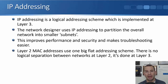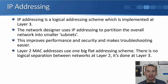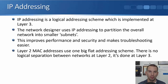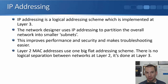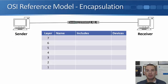At layer 2, which we'll cover in the next section, we have MAC addresses when using Ethernet. IP addresses are at layer 3; MAC addresses are at layer 2. IP addressing is a logical addressing scheme, whereas MAC addresses use one big flat global addressing scheme. There is no logical separation at layer 2 of the OSI model — that's done here at layer 3 with IP addressing.